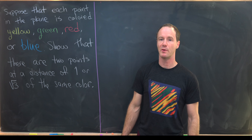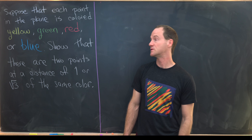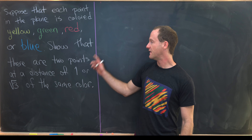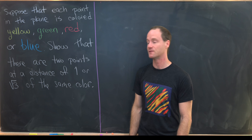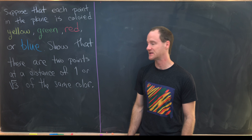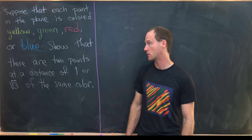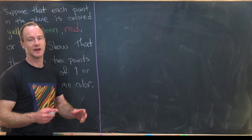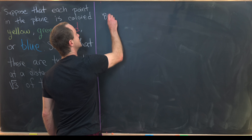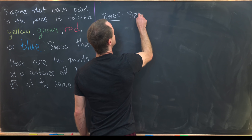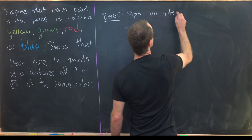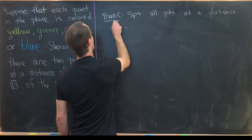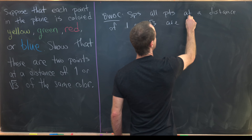Here we have a combinatorics problem about coloring the plane. We suppose that every point in the plane is either yellow, green, red, or blue, and we want to show that there are two points at a distance of one, or two points at a distance of the square root of three, that are the same color. We work towards a contradiction: suppose that all points at a distance of one or the square root of three are different colors.